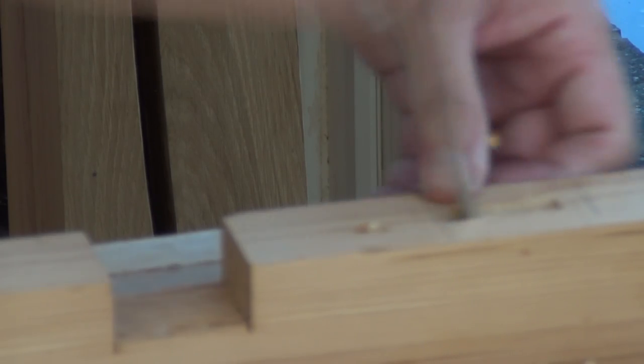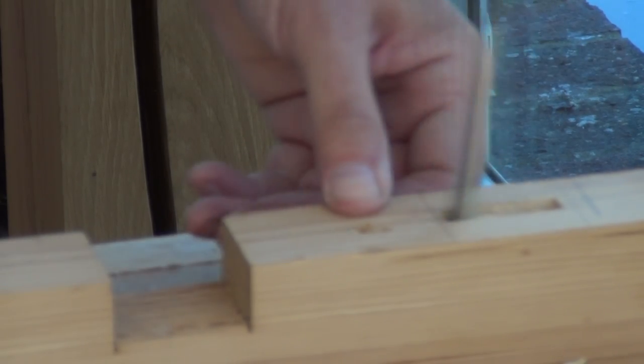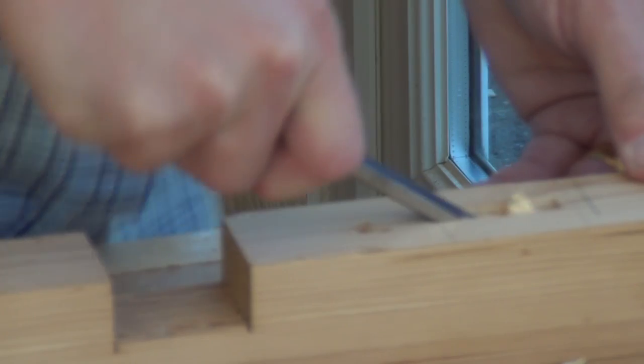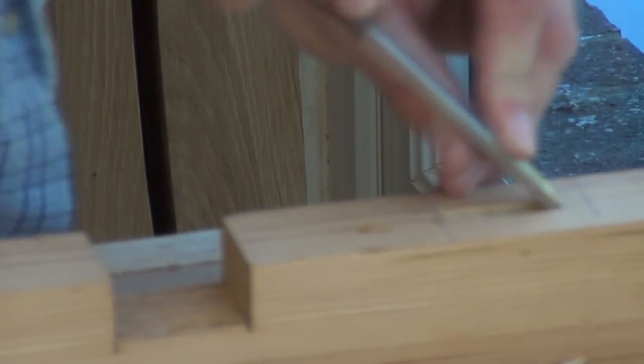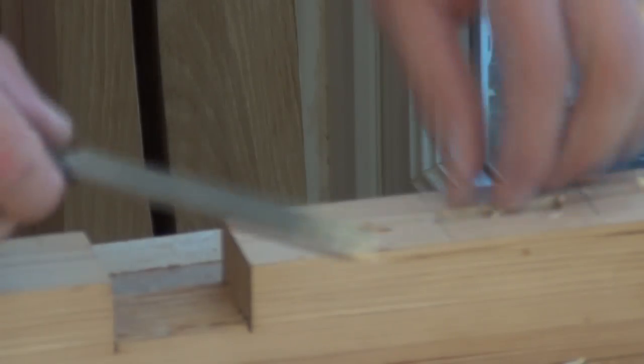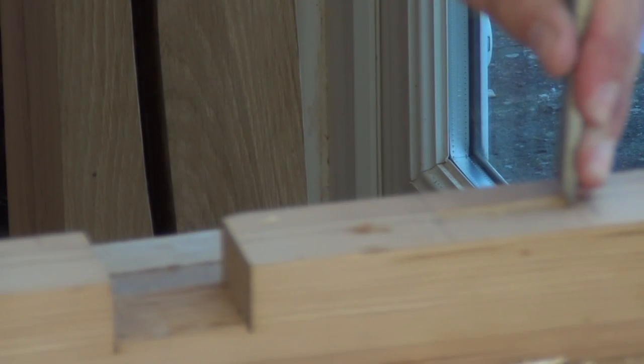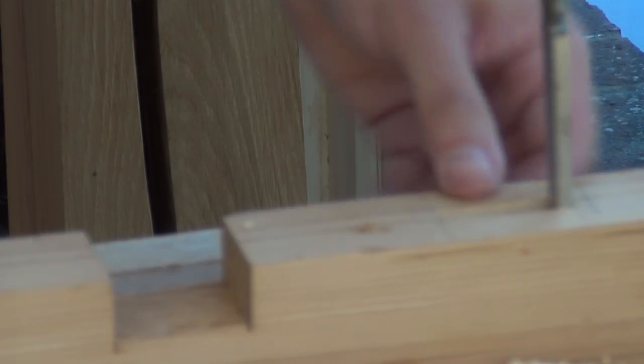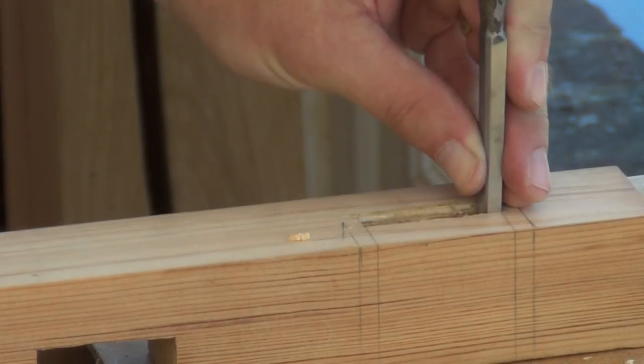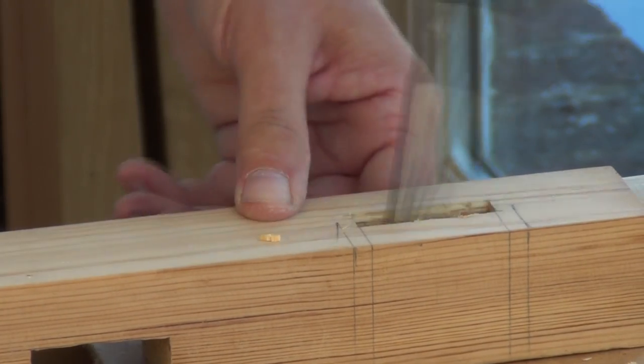Now I'll work back carefully taking thin cuts until I get back to my marking line. So that's our square cut mortise completed.